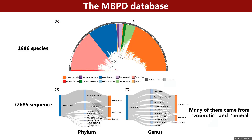The MBPD database consisted of 1,986 pathogen species, and 72,685 sequences were obtained after aligning with the SILVA database. Most of them are animal and zoonotic pathogens.